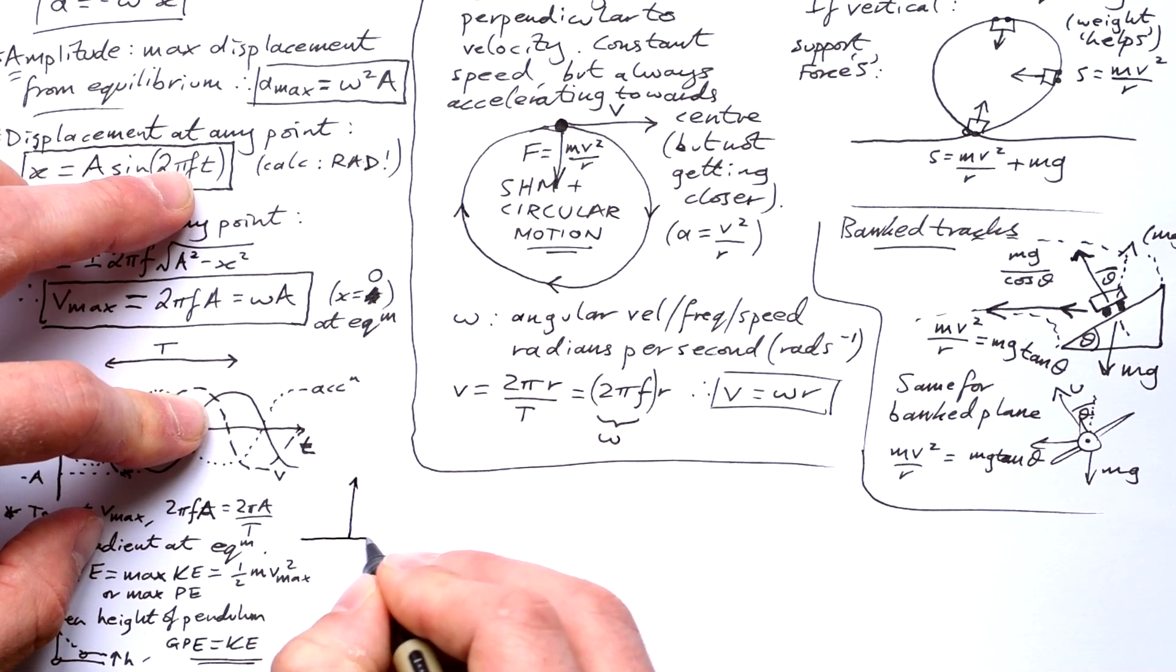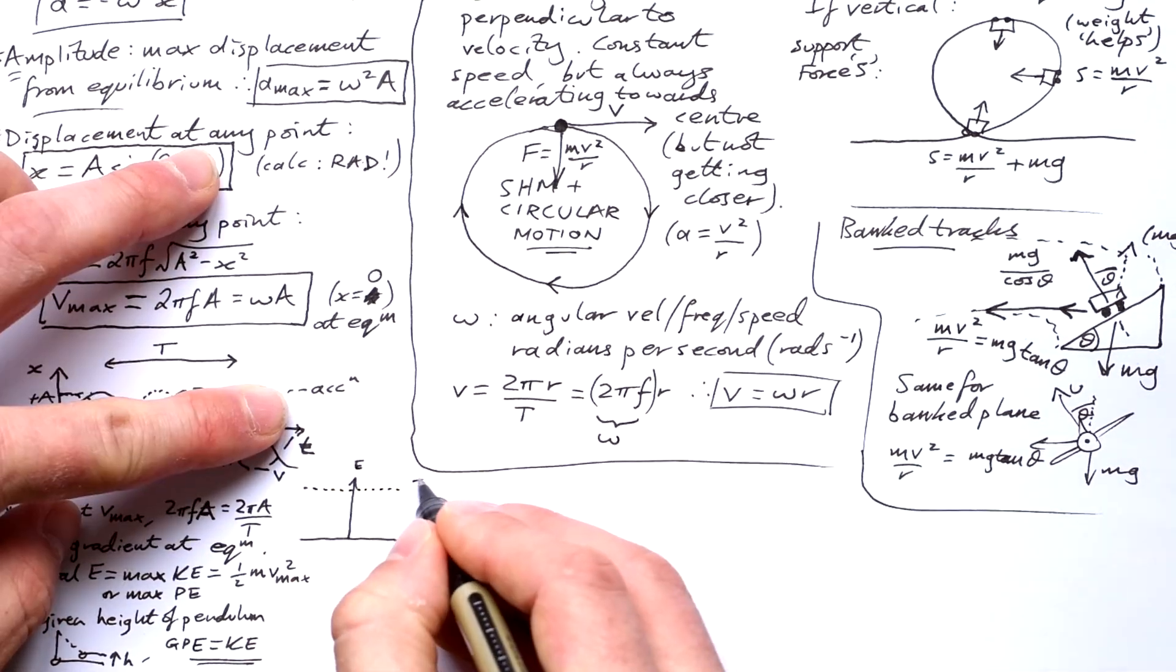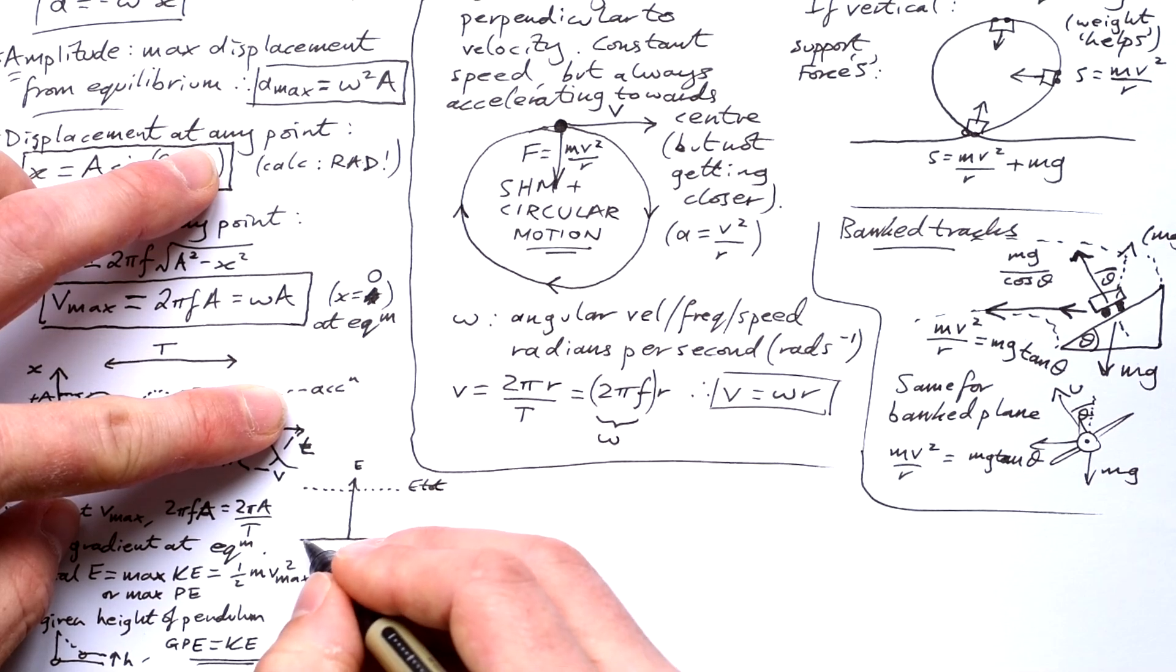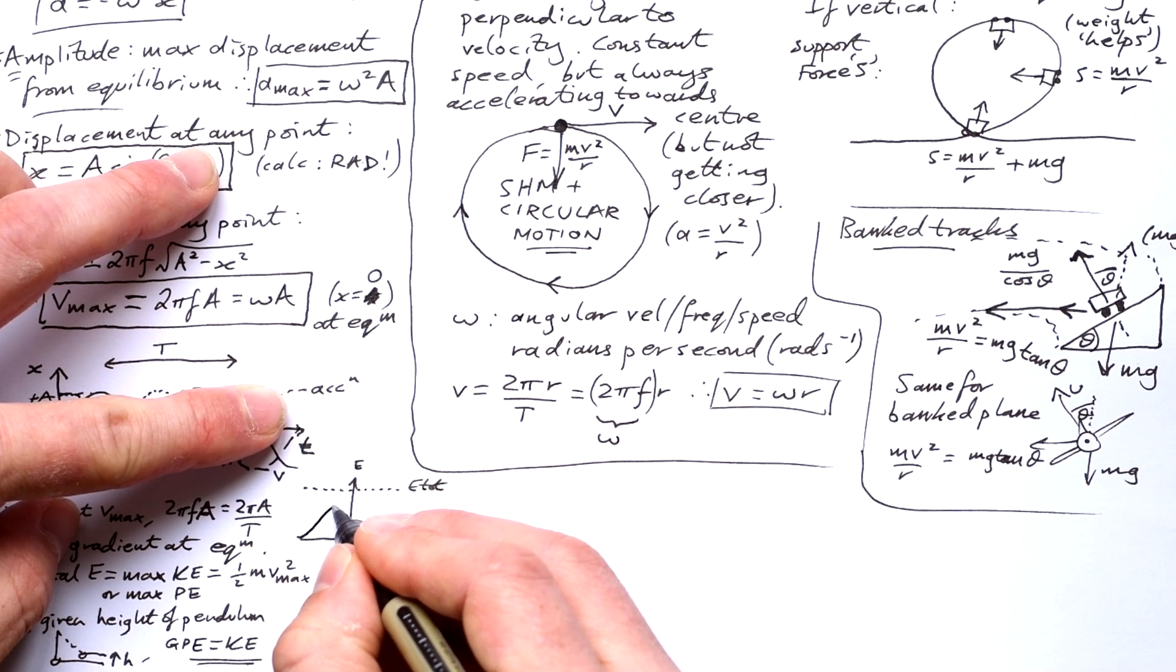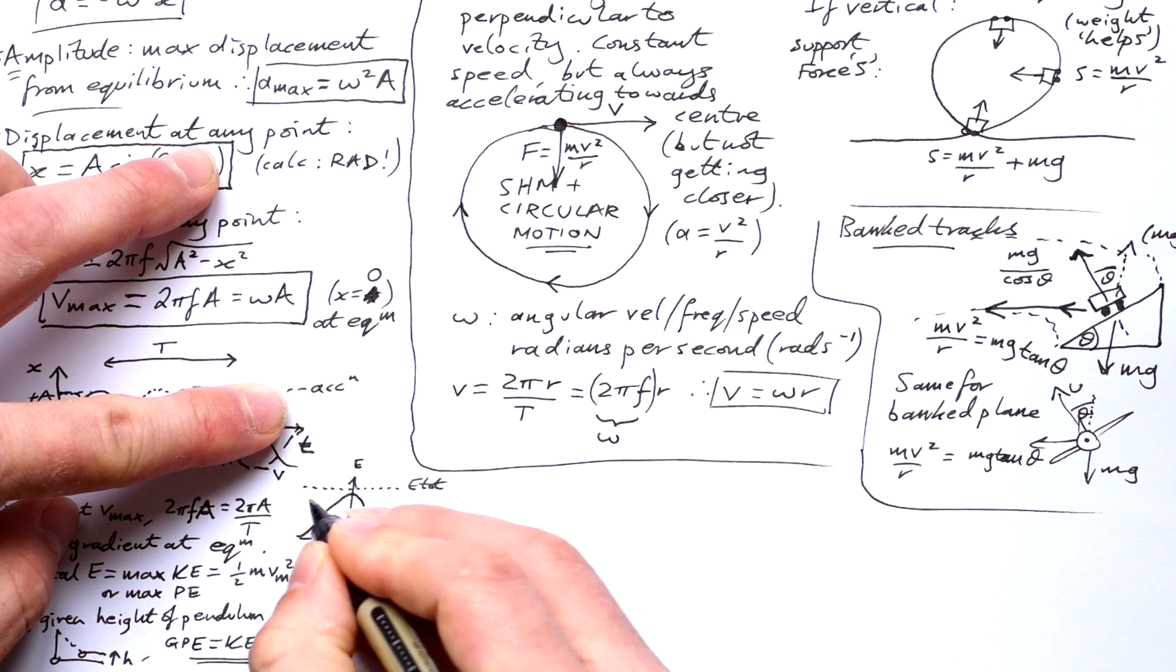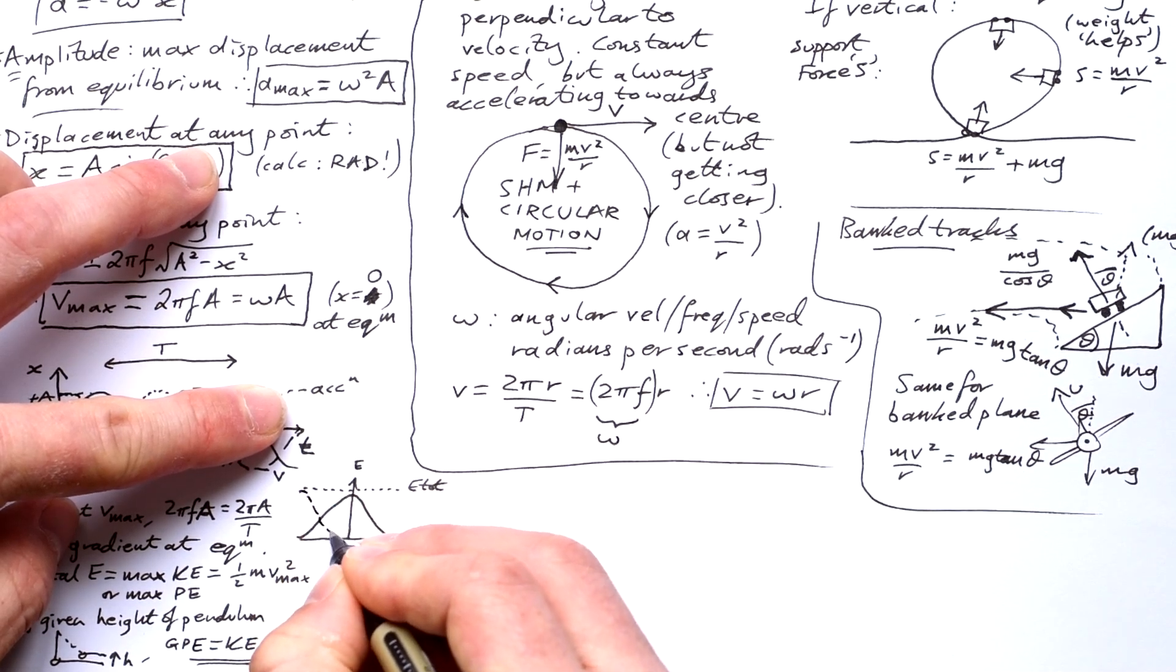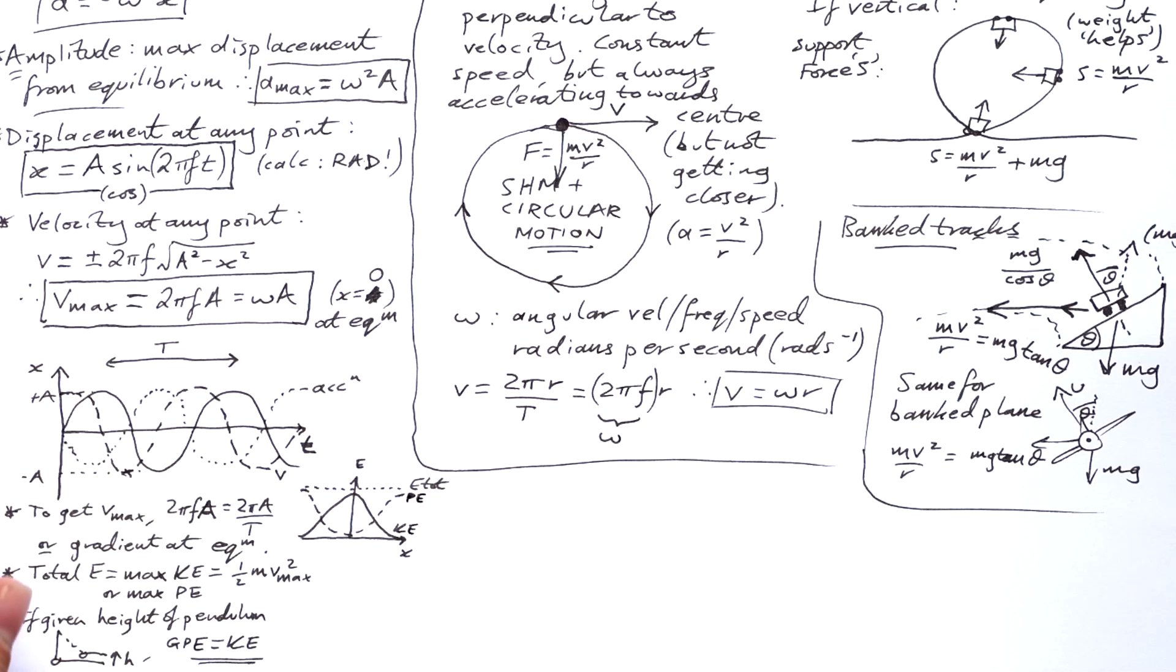Okay. Going back to energy. This is how the various energies are changing over the course of an oscillation because we know that total energy shouldn't change so long as there's no damping or resonance. And we have maximum kinetic energy at equilibrium and maximum potential energy at amplitude.